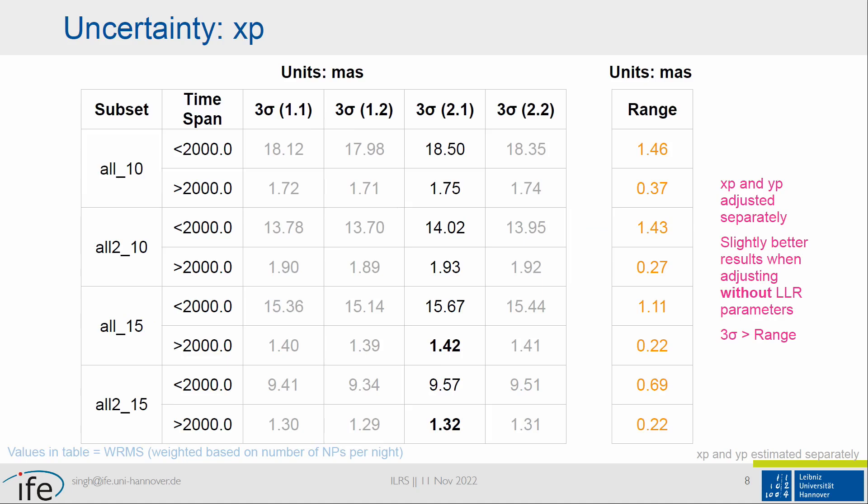Looking at the uncertainty for xp — this is a lot of numbers, so please look at them row by row. From all the different cases, the uncertainty before 2000 and after 2000 looks very similar for all four cases in each row. This essentially indicates that the calculation is quite robust, and whether we adjust or fix certain parameters, the uncertainty stays quite similar. But when we compare these numbers to the range in any particular row, the range is quite small. Therefore, perhaps the three sigma is not the correct value when estimating xp from Lunar Laser Ranging.